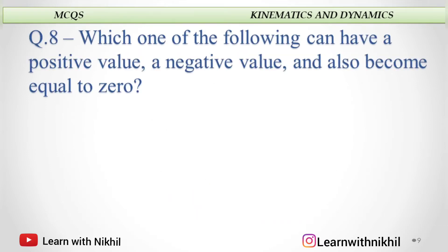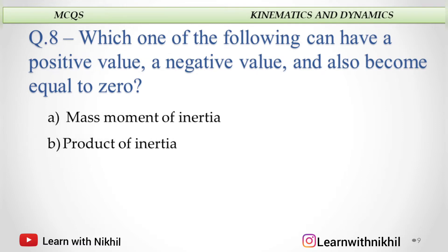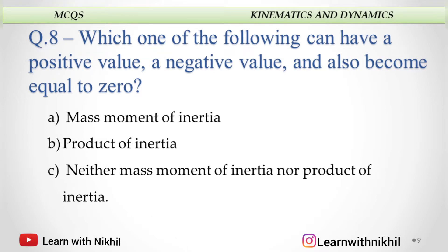Which of the following can have a positive value, a negative value, and also become equal to zero? The options are: mass moment of inertia, product of inertia, neither mass moment of inertia nor product of inertia, or area moment of inertia. The answer is product of inertia, which can have all those values.